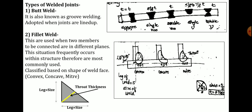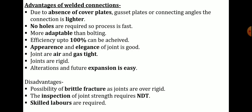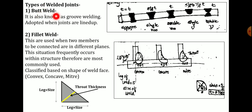Next, types of welded joints. The first is butt type of weld. Similar to bolted joints, butt joints occur when the members to be connected are kept end to end. Butt weld is also known as groove welding and is adapted when joints are lined up. These weld types are classified into five types based on depth of penetration: square, single V, double V, single U, and double U.